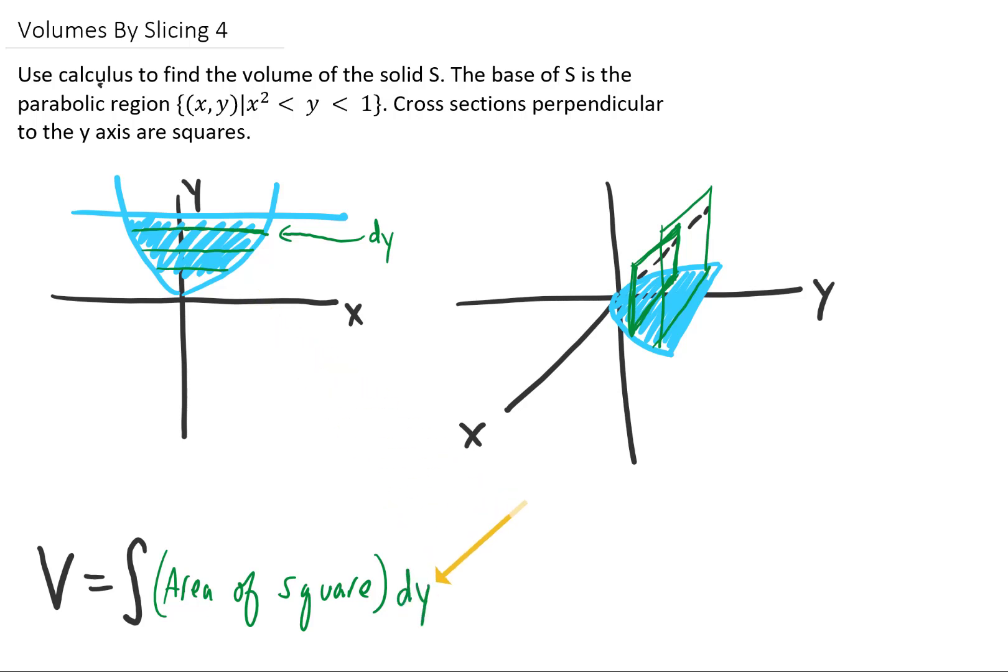So we're just going to call that dy. Now we can immediately say, since we're integrating with respect to y, we can see from this graph that the smallest value of y is right here at zero, and the largest value of y is right here at y equals 1 for this region. So we can immediately put in our limits on y of 0 to 1.